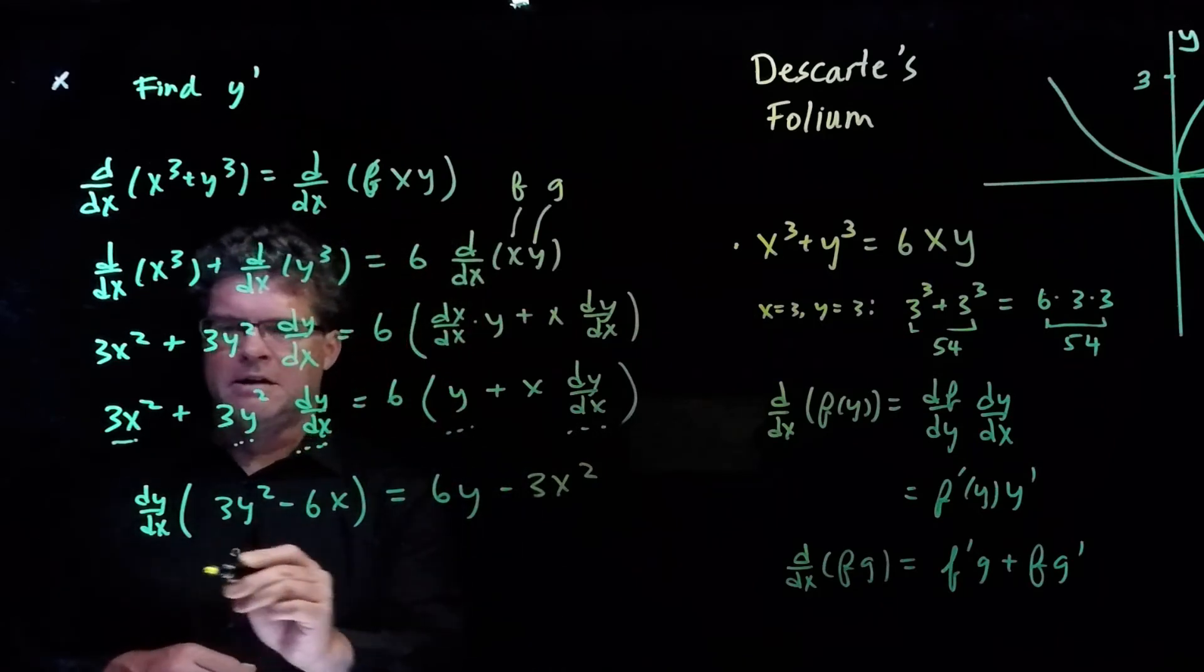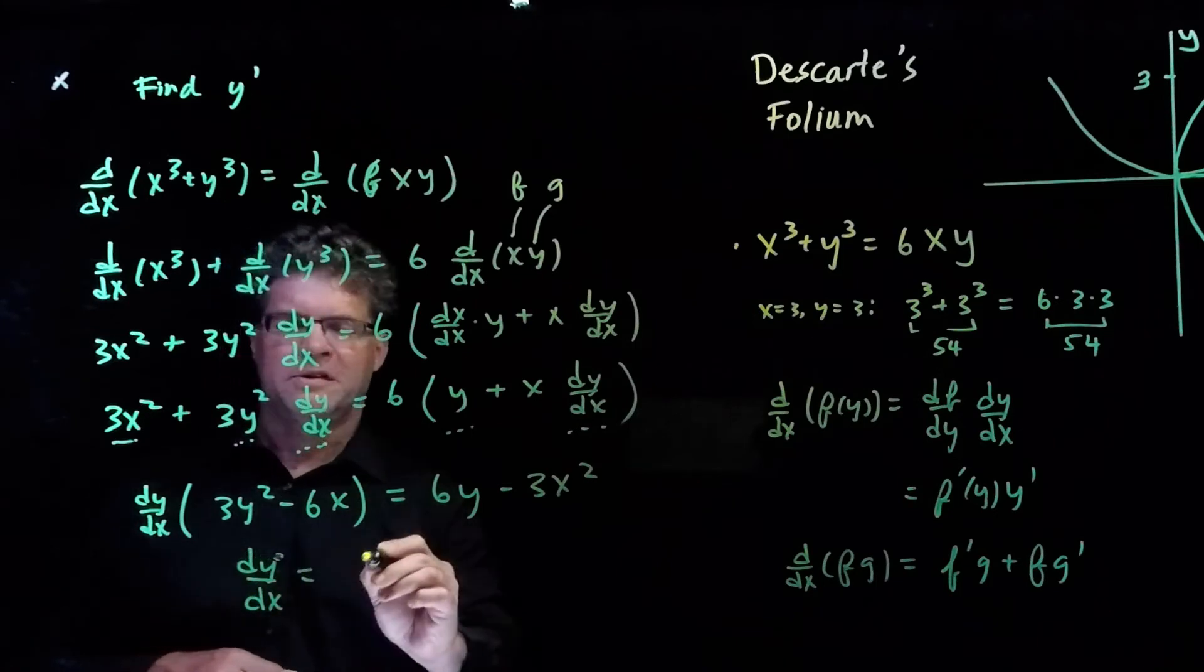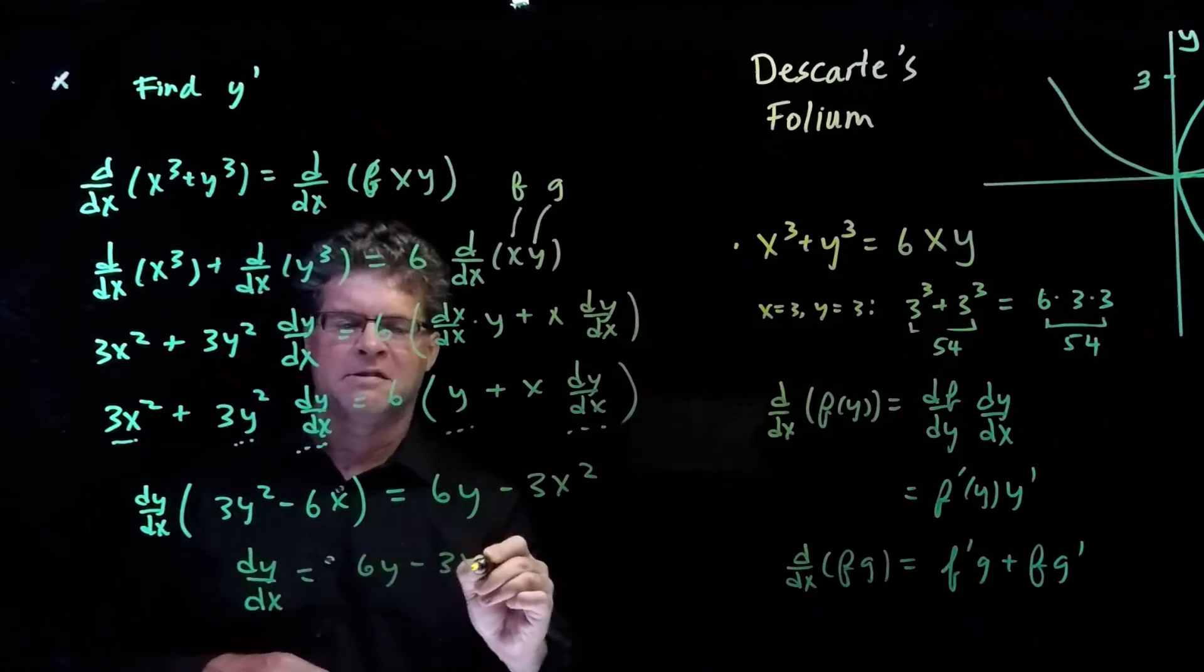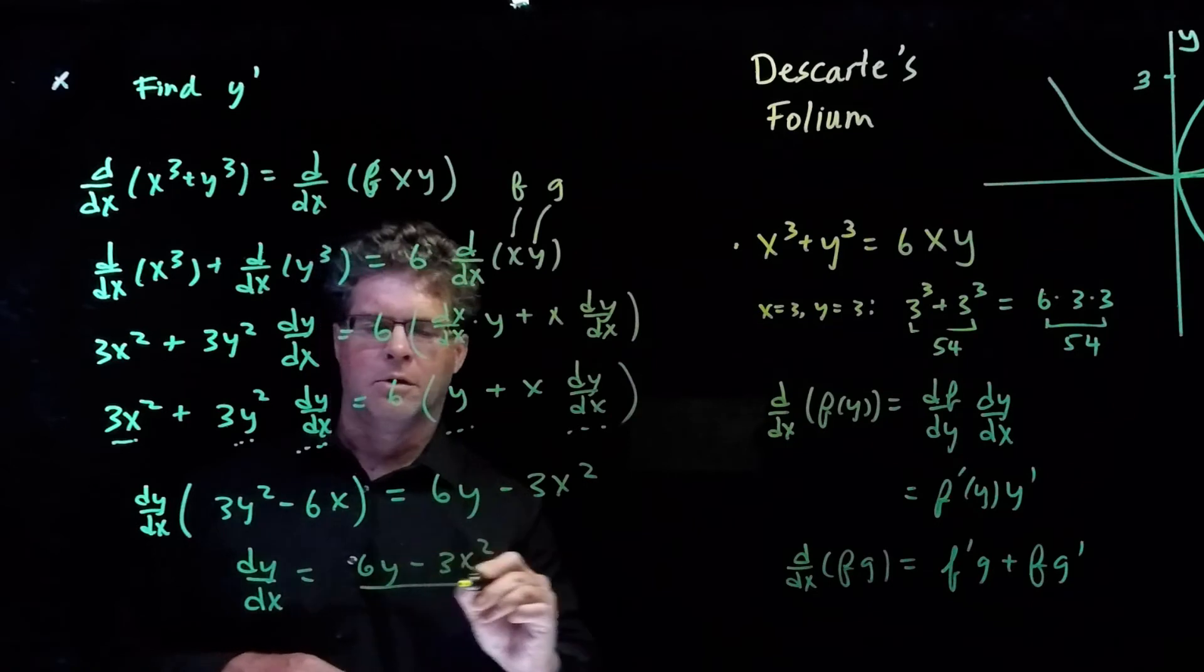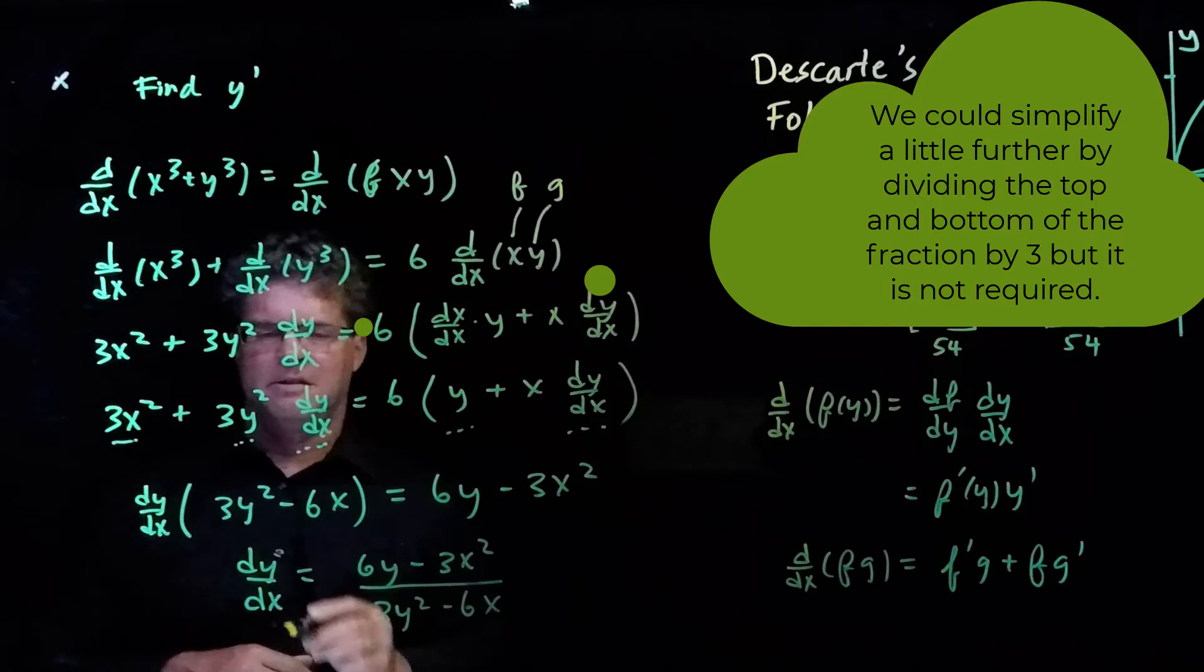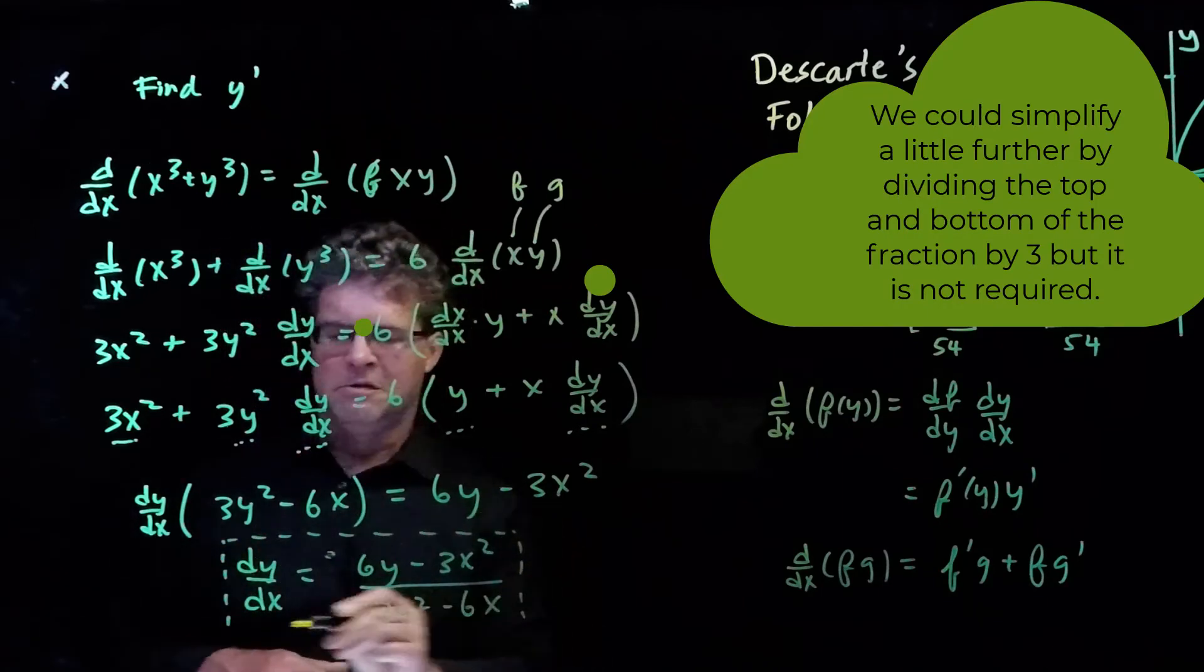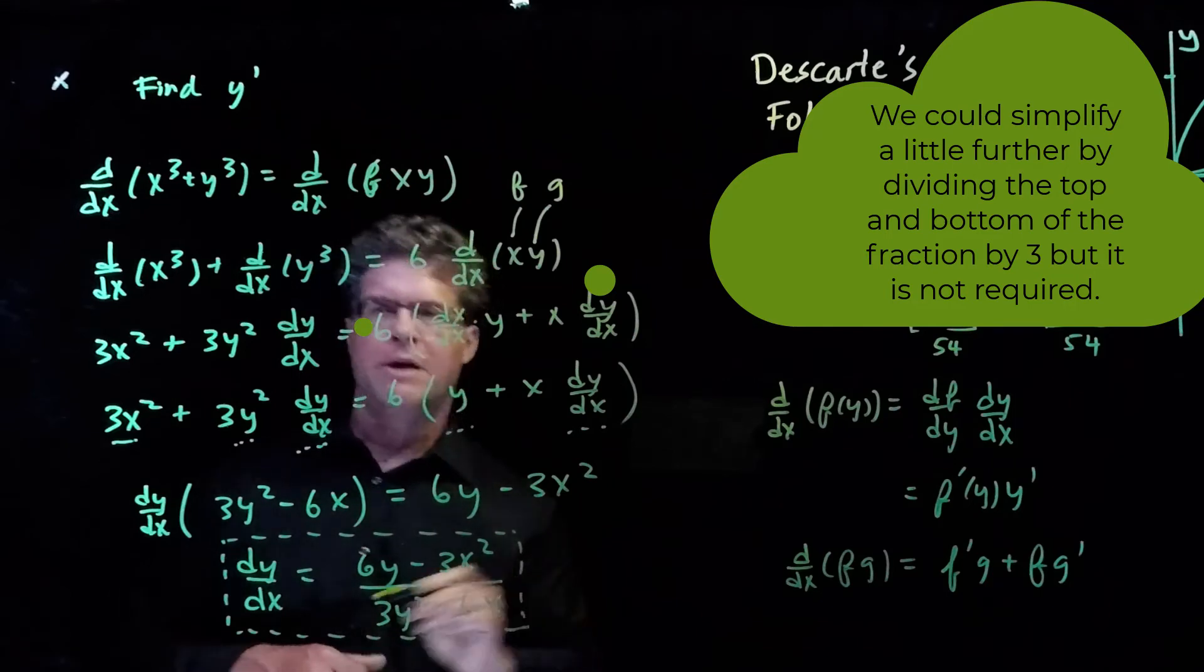Now solving for dy/dx, we have dy/dx is equal to 6y minus 3x squared over 3y squared minus 6x. And so this is our formula that we can use when we write our tangent line.